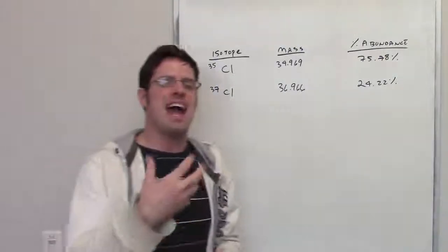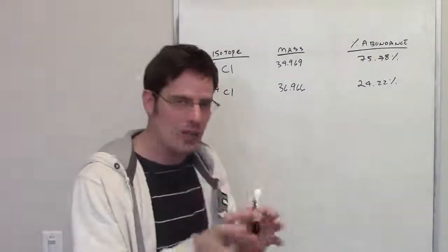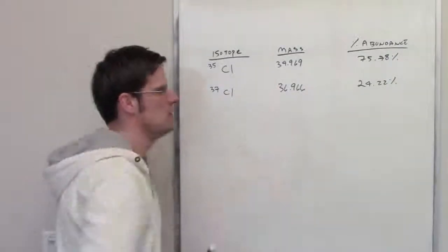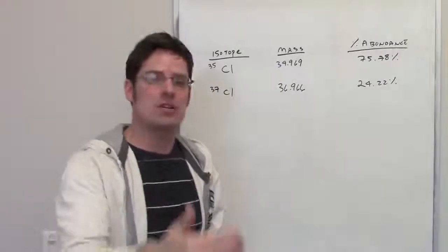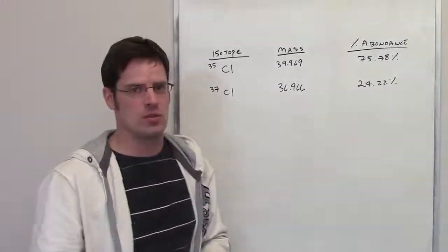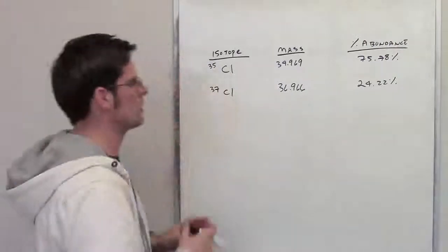Now, if you look up the actual atomic mass of chlorine on the periodic table, that number that you see in the box doesn't correspond to either of these. What it is is a weighted percentage that combines both of these and incorporates their relative ratios. So to solve this problem, what we're going to do is this.